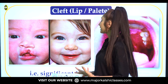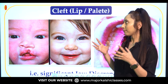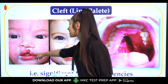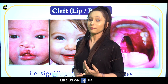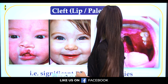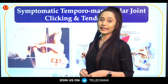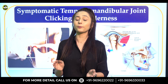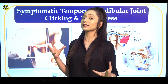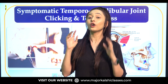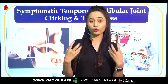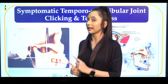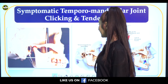Then, cleft palate or cleft lip — an abnormal gap or discontinuation in your lips or palate — is not allowed in defense. Next, symptomatic temporomandibular joint (TMJ) clicking and tenderness, where your mouth cannot be completely opened, or you experience clicking or discomfort while opening your mouth or chewing. You can definitely be unfit in all these conditions.